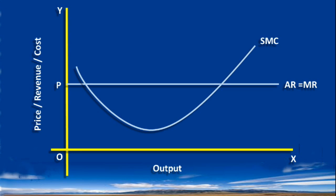Draw the SMC curve. Fix the point E where short run marginal cost curve cuts the marginal revenue curve from below. Draw a perpendicular line and fix the output M along the X axis.